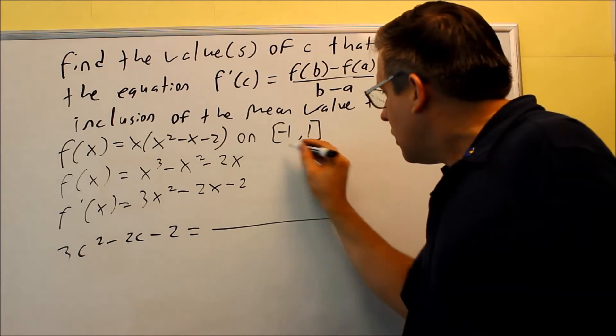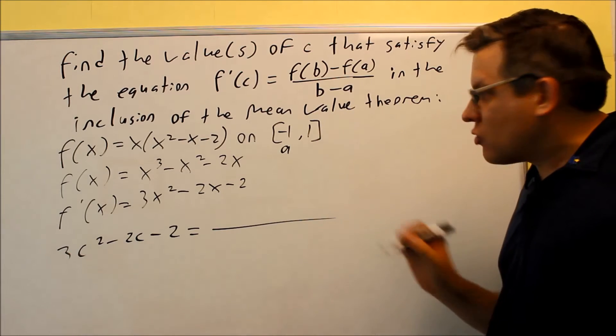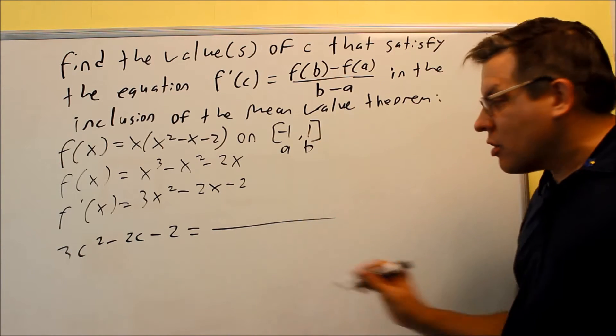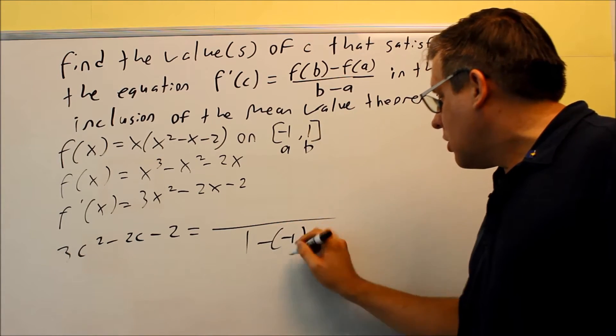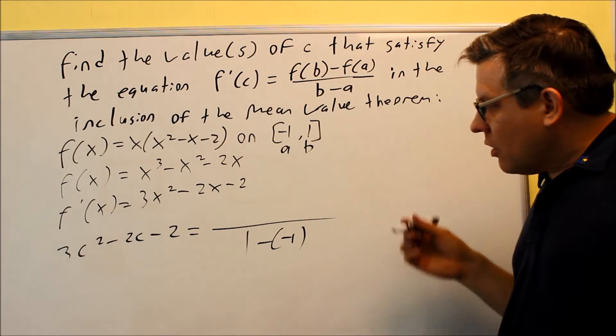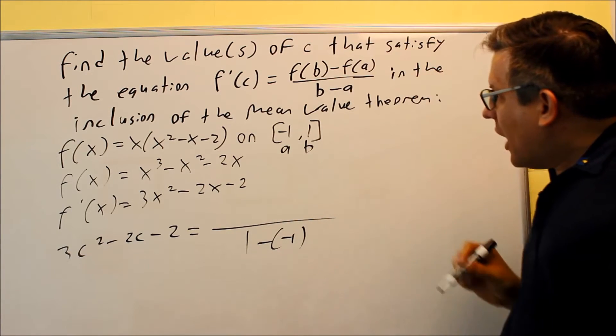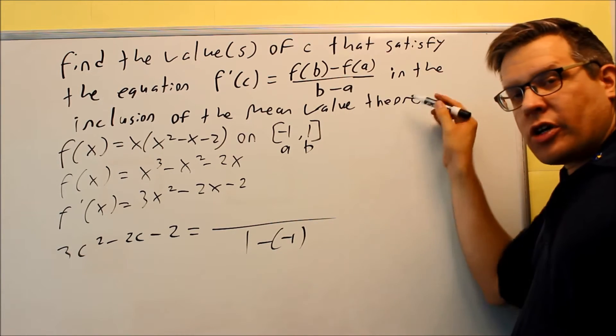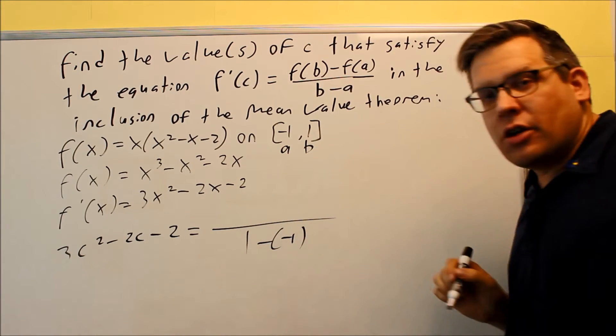Now down below I have B minus A. Your A is always the first one, and your B is the second one here, so we're going to do 1 minus negative 1. Now on top I have F of B and I have F of A. I'm going to work these out on the side first and then put them back in here.